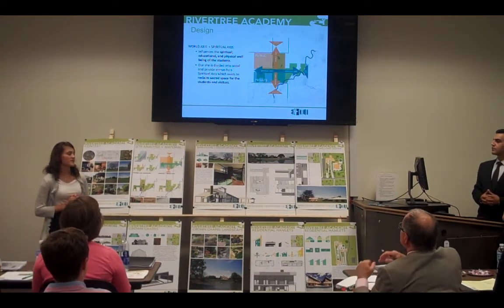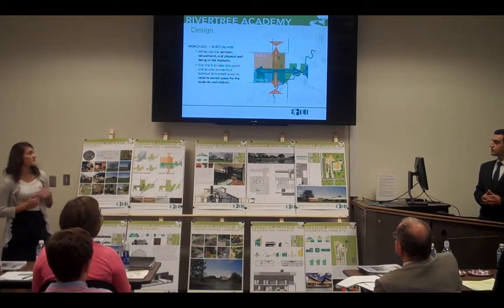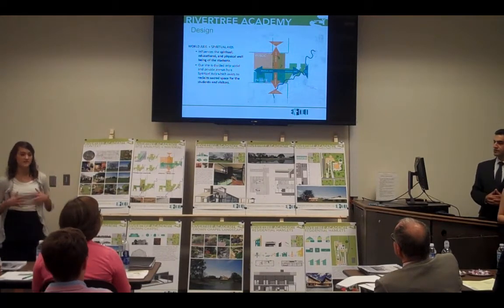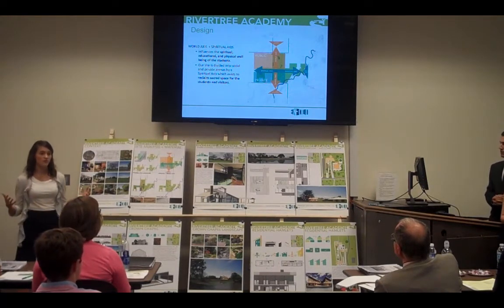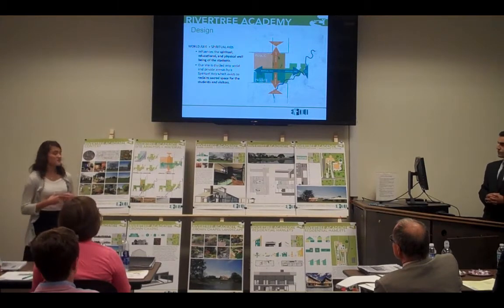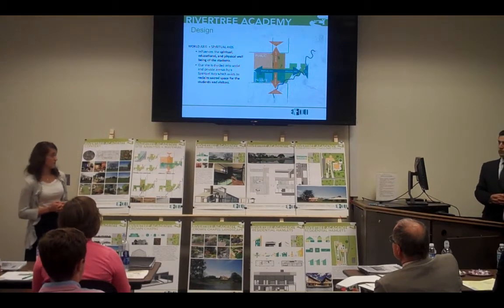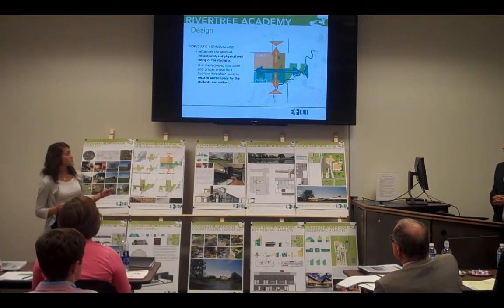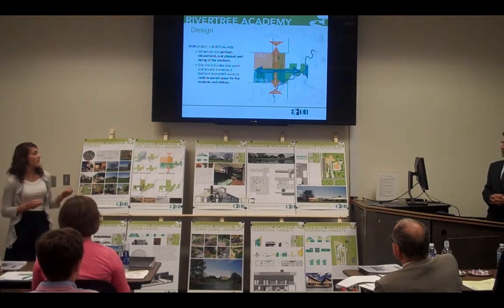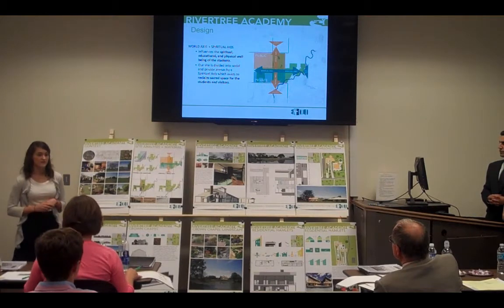Next, we divided our site into the spiritual axis and the world axis. The world axis is defined by the existing roads and represents the place — the outside world that the students of Como are coming from and ultimately what they're going to be influencing when they graduate from River Tree. The spiritual axis is defined by the view and is set apart, dividing the site into the public side in the north and the private in the south.